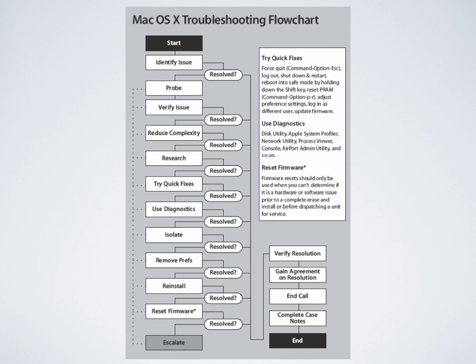Looking at the Mac OS X troubleshooting flowchart, we can see that we start by identifying the issue, then probing the issue, verifying the issue, reducing the complexity by removing all peripherals, and doing some research. We try quick fixes, use diagnostics, isolate the problem, remove the preferences, reinstall the operating system, and reset the firmware.